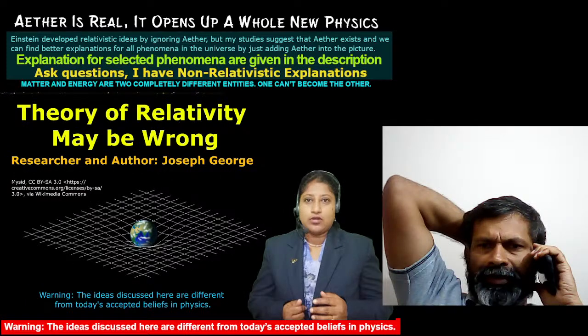The theory of relativity may be wrong. Einstein had completely ignored the possibility of aether when he developed the theories of relativity. However, Joseph George's studies suggest that the space-filling aether exists and it can be experimentally verified. In fact, by just adding aether into the picture, we can find better alternative explanations for all phenomena that are explained or predicted by the theory of relativity.